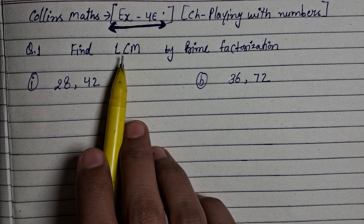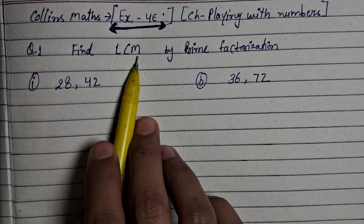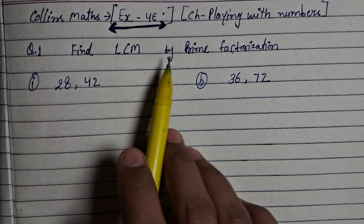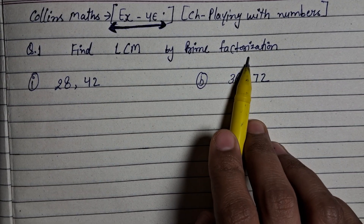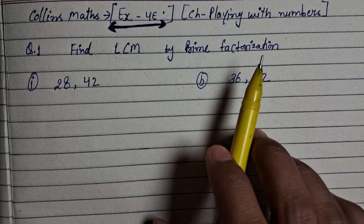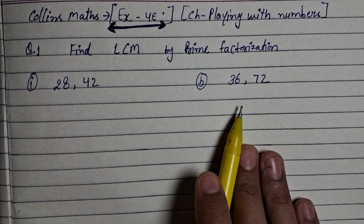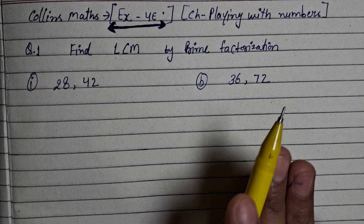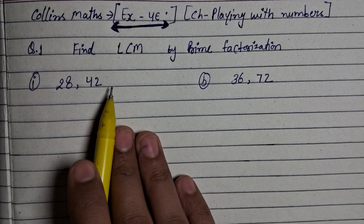What is LCM full form? Lowest Common Multiple. So we have to find out the lowest common multiple. Which method? Prime factorization. We have to find out LCM with prime factorization. From the first exercise, we had to find out HCF — that means Highest Common Factor. So now we will do this.